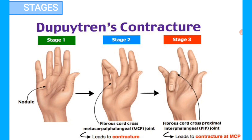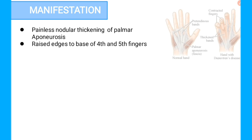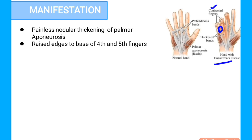Stage three causes the fourth and fifth fingers to flex partially. The clinical manifestations of Dupuytren's contracture include painless nodular thickening of the palmar aponeurosis or palmar fascia, with raised edges at the base of the fourth and fifth fingers. As you can see in the image, the diseased hand shows thickening bands causing the painless nodular thickening.